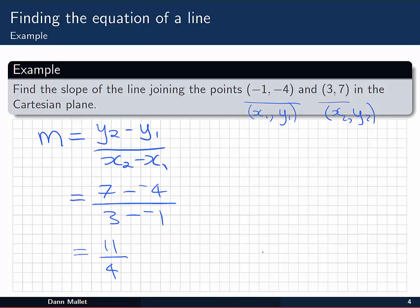That means it's a positive value, so this line would, if we graphed it, look something like this. It would have a positive slope, increasing from left to right.